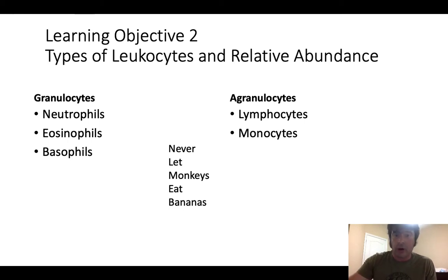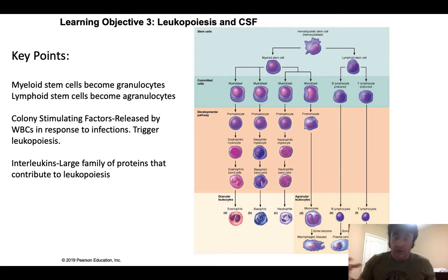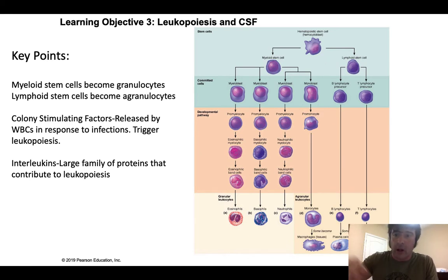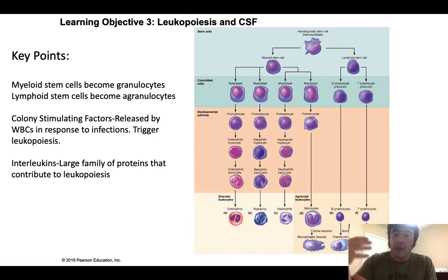All white blood cells are produced in the red bone marrow through a process called hematopoiesis — the formation of blood's formed elements: red blood cells, white blood cells, and platelets. The cells they all derive from are called hematopoietic stem cells, which are unique because they can become any cell. When a stem cell matures into an adult cell that serves a function, that process is called differentiation.